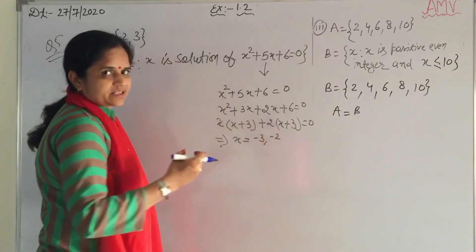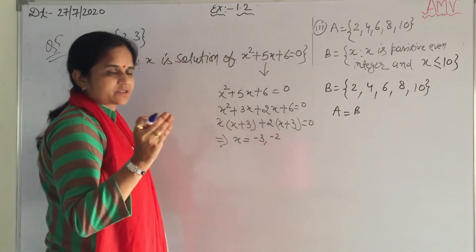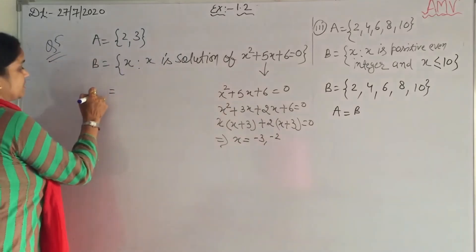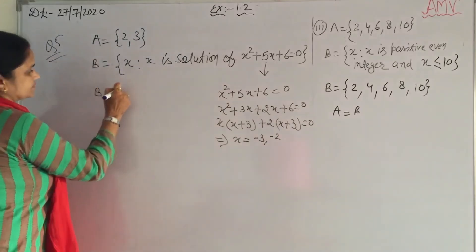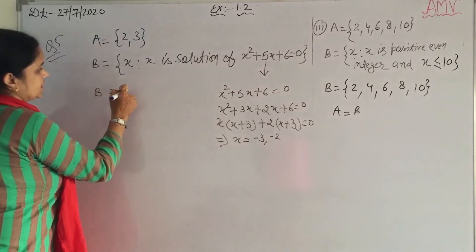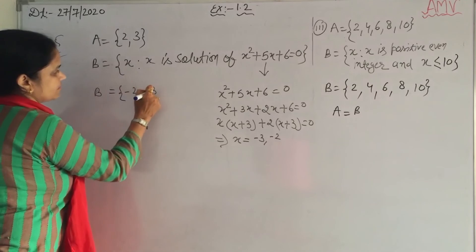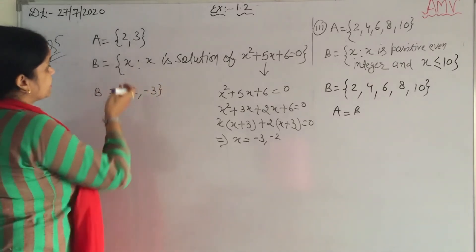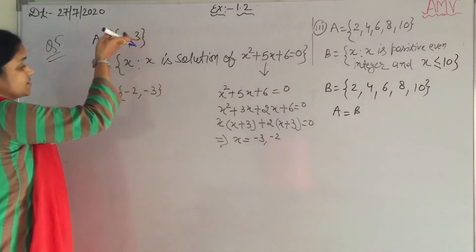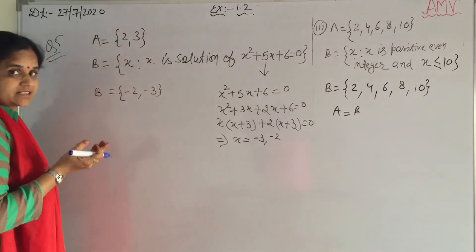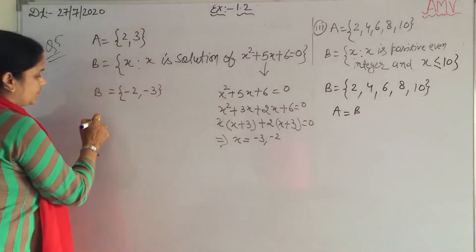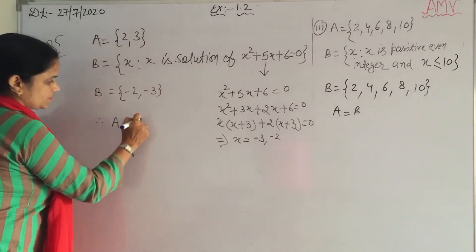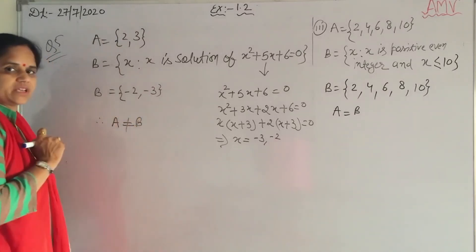So B = {−3, −2} and A = {2, 3}. These are not equal sets. So here A is not equal to B.